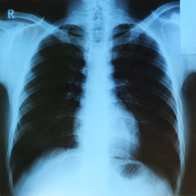Fluoroscopy is an imaging technique commonly used by physicians or radiation therapists to obtain real-time moving images of the internal structures of a patient through the use of a fluoroscope. In its simplest form, a fluoroscope consists of an X-ray source and a fluorescent screen between which a patient is placed. Modern fluoroscopes couple the screen to an X-ray image intensifier and CCD video camera allowing the images to be recorded and played on a monitor. Examples include cardiac catheterization and barium swallow to examine for esophageal and swallowing disorders.